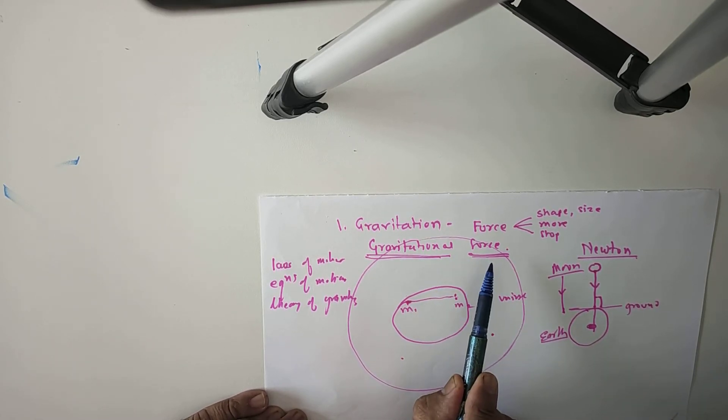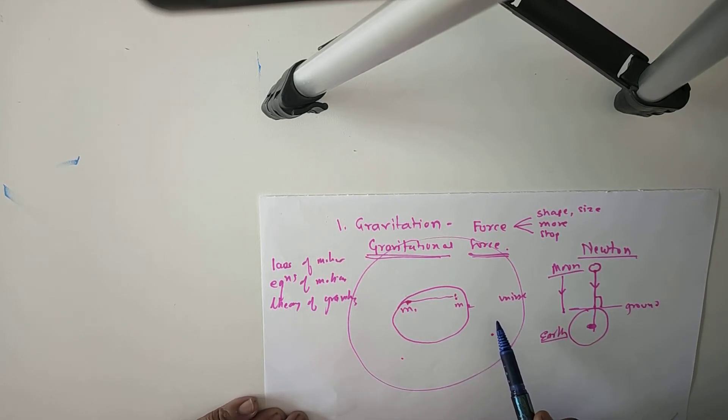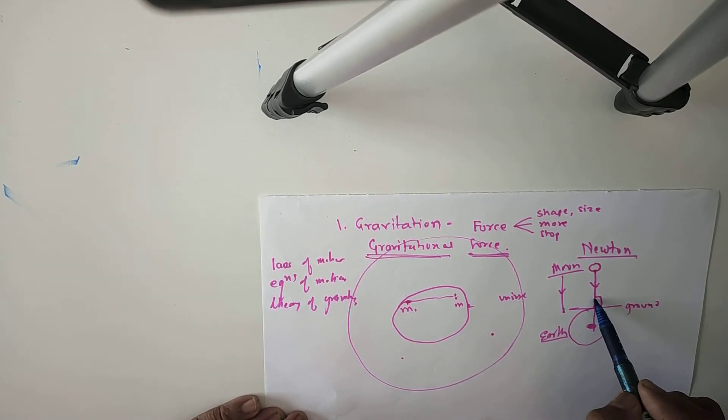It acts between two objects on earth, as well as it acts between any two objects in the universe. And if it acts on this earth, it is vertically downward direction and towards center of earth.